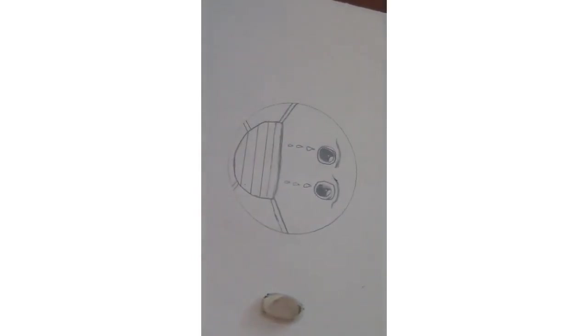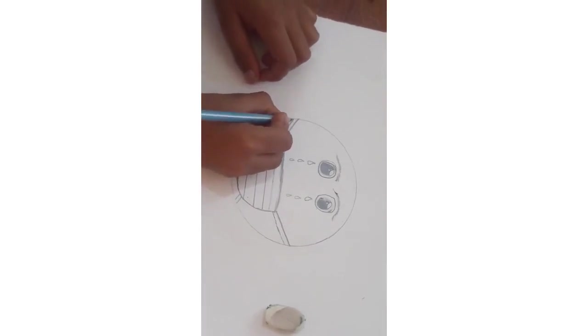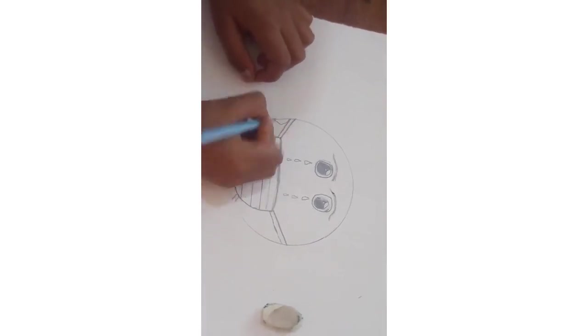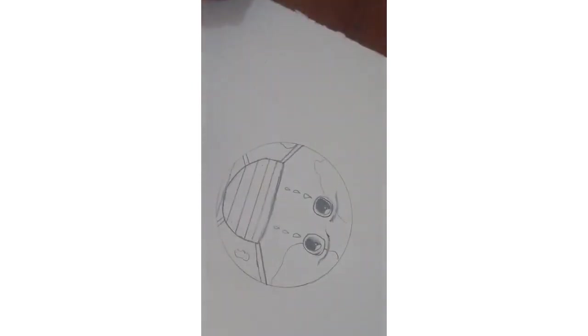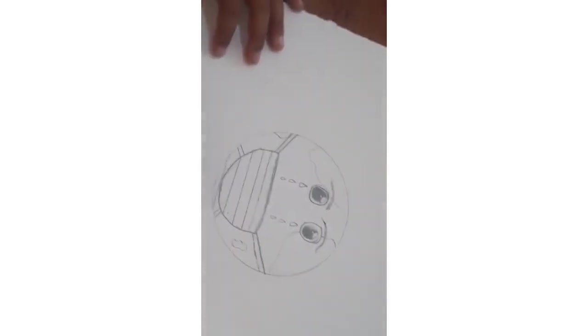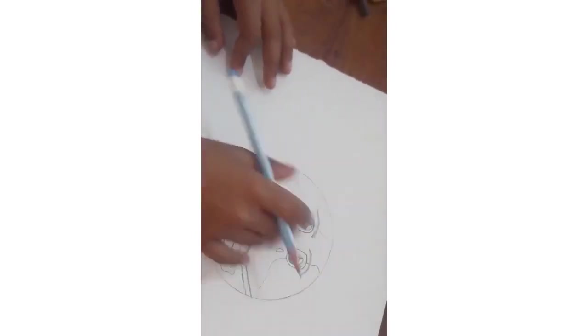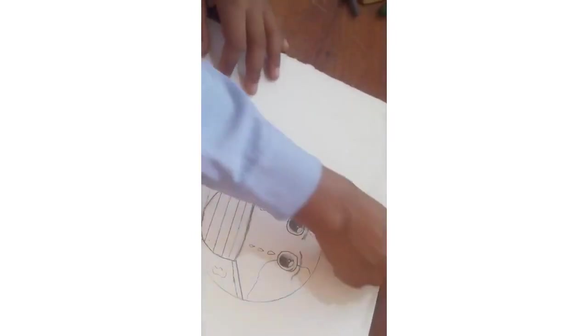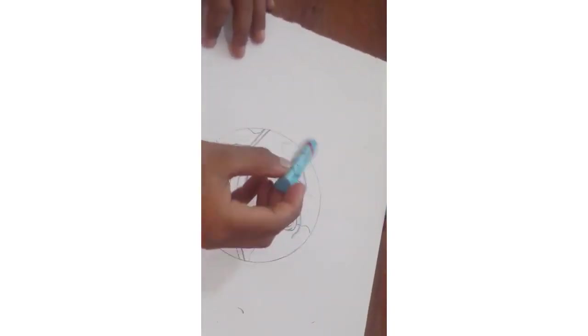So now we will start to make the continents. So first I will start the first continent from here. Then a very small continent from here. So now all of the continents are done. So now we will start the color. First I will take the blue color to draw its water.